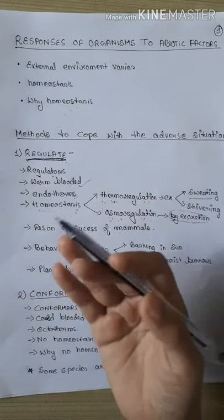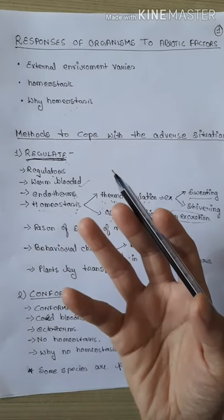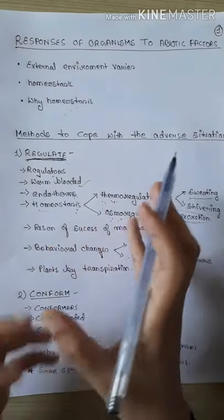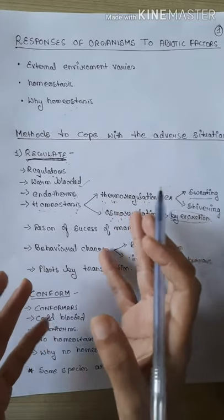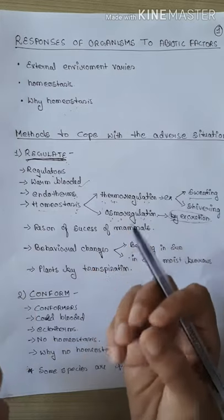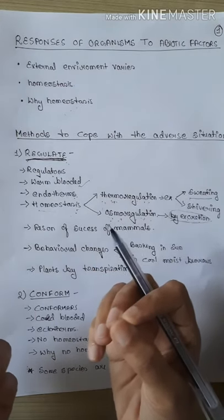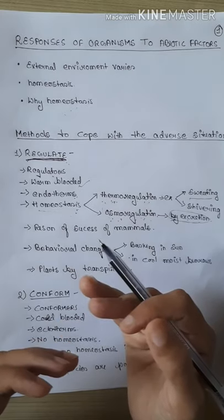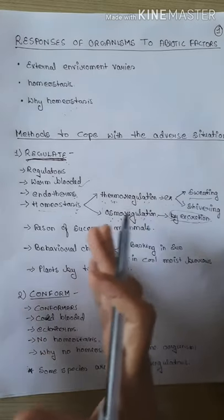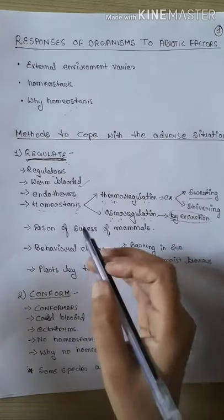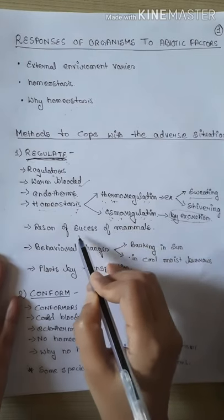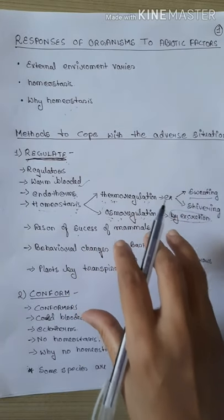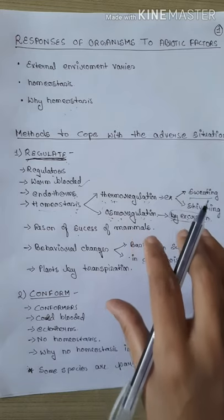Aur agar iske viprit thand badh gayi — jaise winter season mein jab humein thand lagna shuru hoti hai — to kya hota hai? Hum kaapna shuru karte hain — shivering. Aur is wajah se hum adjust kar paate hain ki bahar ki thand se hamaari body temperature par zyaada fark na pade. Aur yeh jo homeostasis process hai, yahi woh reason hai jo mammals ko success dilaata hai ki woh is earth pe sabse zyaada aasaani se apni life continue kar pa rahe hain.